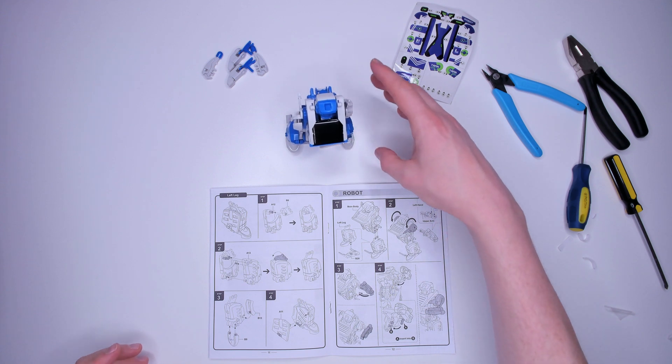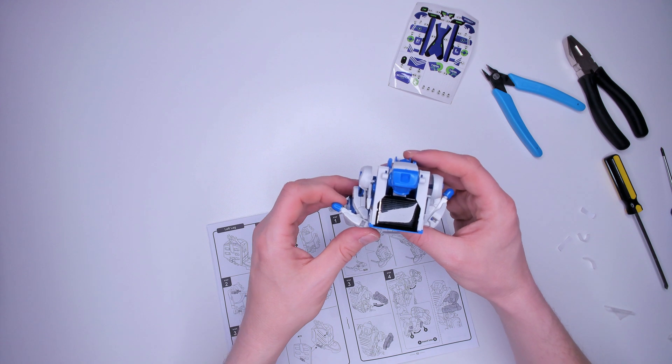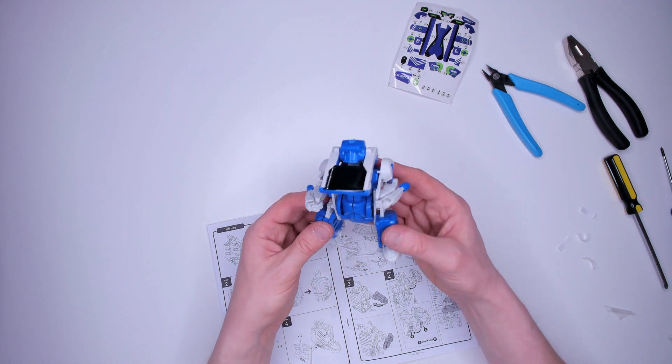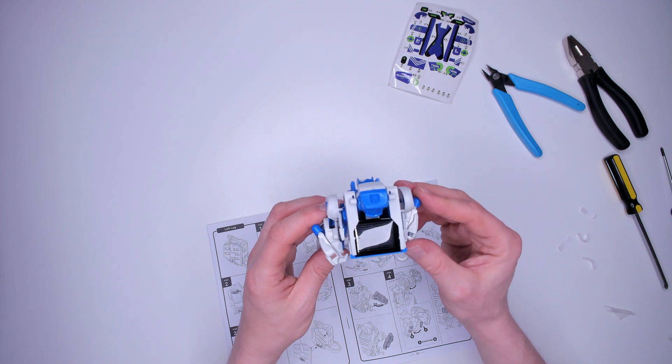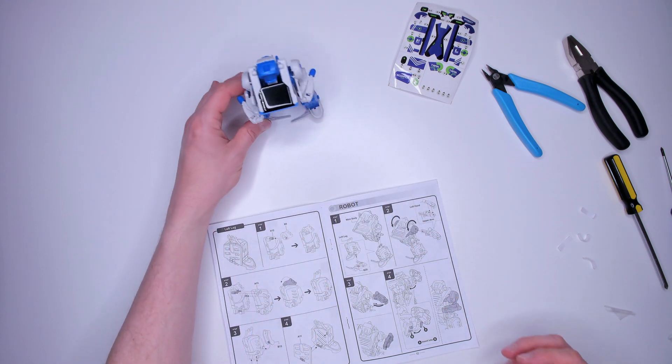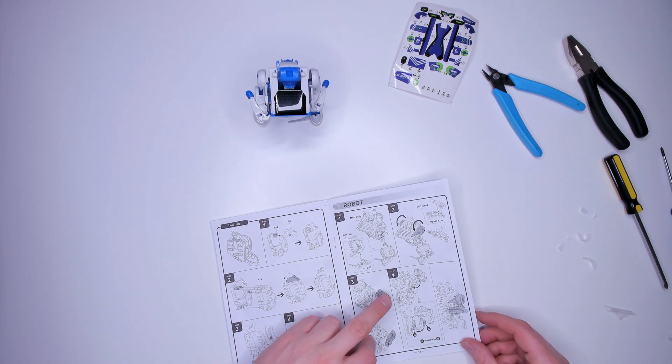There we go, done. Now the arms and hands attached to the shoulders we added earlier. Again important that they are the right way round. Complete. It's still not moving, but the instructions say to go outside into the sunshine. Luckily in Australia the sun always shines, so I'm going to go outside right now and try it out.